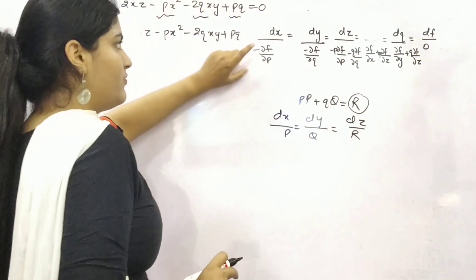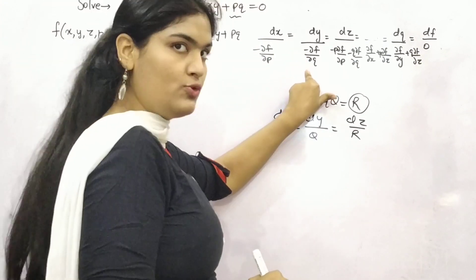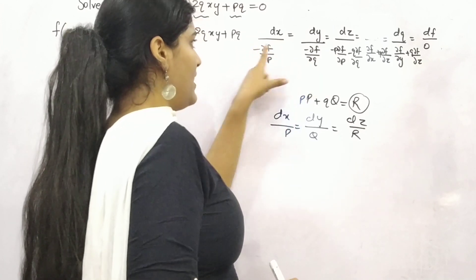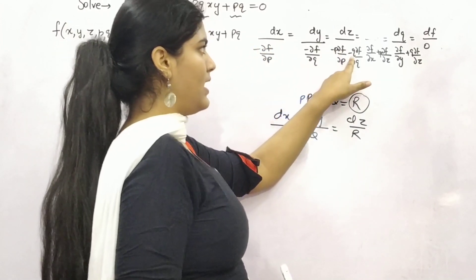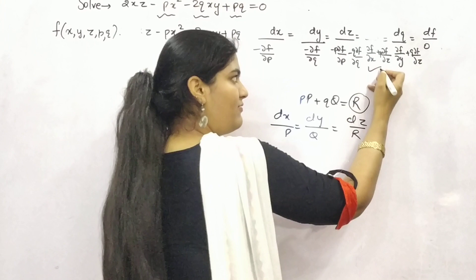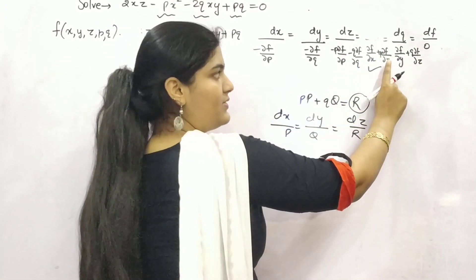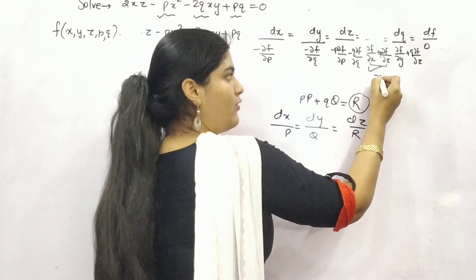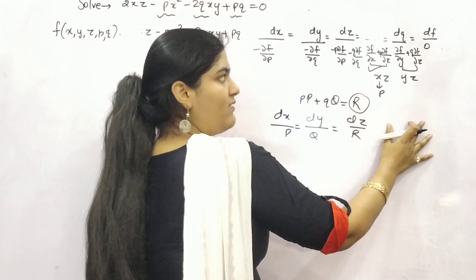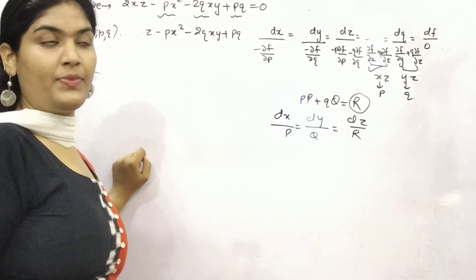Now this is the formula for Charpet's method. I hope you can find it easy to see. Write all the differentiable variable factors. So dx, dy, dz, dp, dq, df. In denominator form, firstly take negative of partial differentiation of f with respect to p, then with respect to q. Then with dz you need to take this and this but with p and q factors. Thereafter for dp and dq you need to take z.